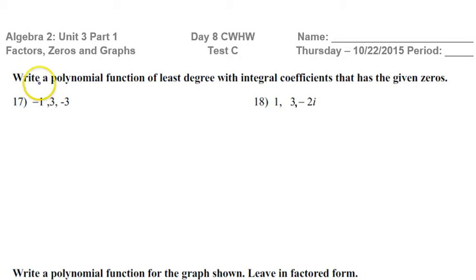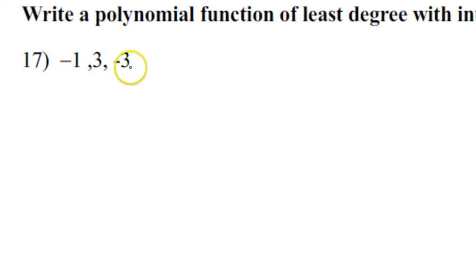For these problems, we're going to practice writing a polynomial function if we are given the zeros of the function, including some imaginary ones. So if these are the zeros of the function for number 17, then that means the factors are x plus 1 and x minus 3 and x plus 3.